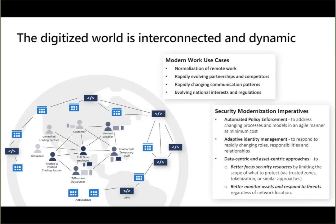You need things like automated policy enforcement so you don't have to worry about manually applying things when stuff changes. Adaptive identity management that can handle role changes — a person who becomes a vendor, then a supplier, then a contributor, then a competitor in a short period of time. The way I like to think about zero trust: we're not trying to pull users and assets into the realm of IT and security. We're taking the security to the users and the assets, meeting them where they are — the data, the applications that matter to the business.